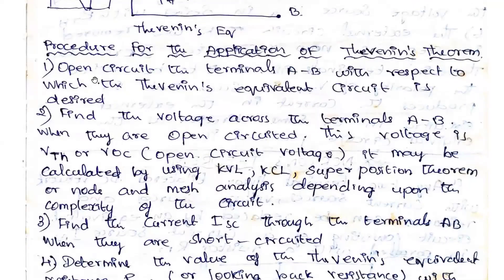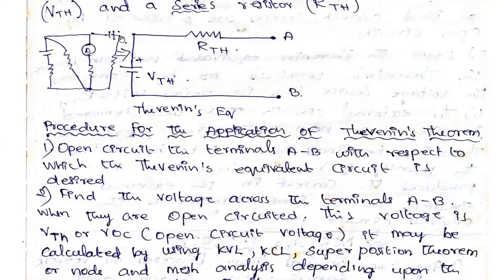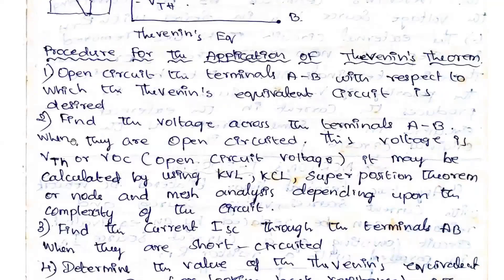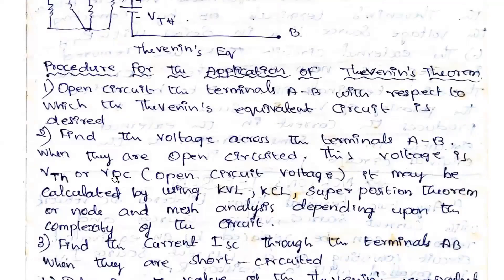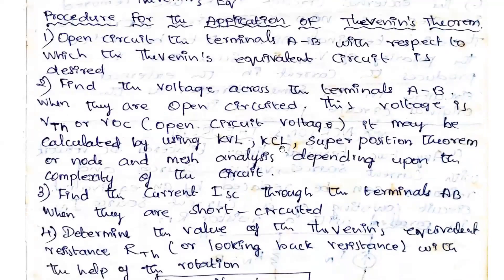Step 1: Open circuit the terminal A and B. This is the network; if you take terminals A and B, open circuit this terminal — A and B — with respect to which the Thevenin equivalence is calculated. Step 2: Find the voltage across the terminal A and B when they are open circuit. You need to find out the voltage across the open circuit, which is nothing but VTH, the open circuit voltage. It may be calculated using Kirchhoff's voltage law, Kirchhoff's current law, superposition theorem, or node and mesh analysis, depending upon the complexity of the circuit.